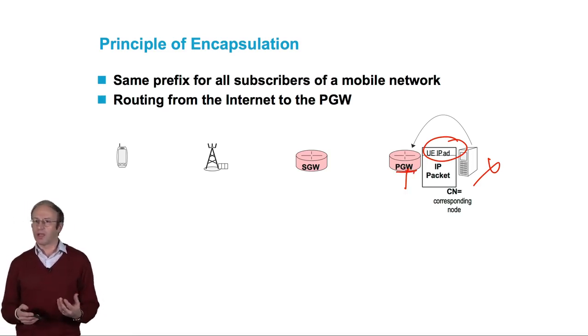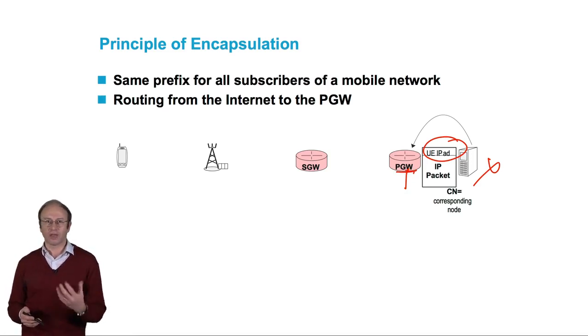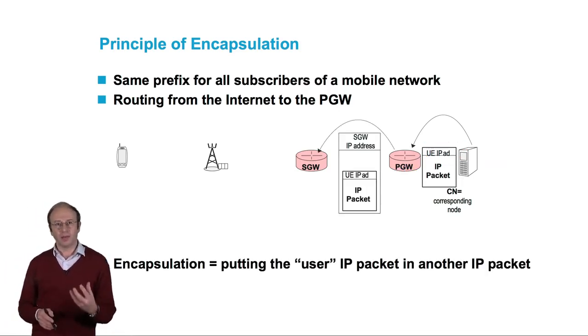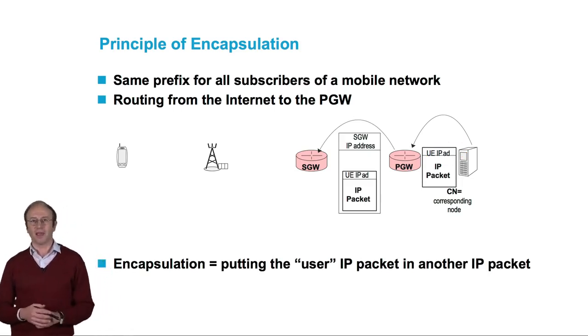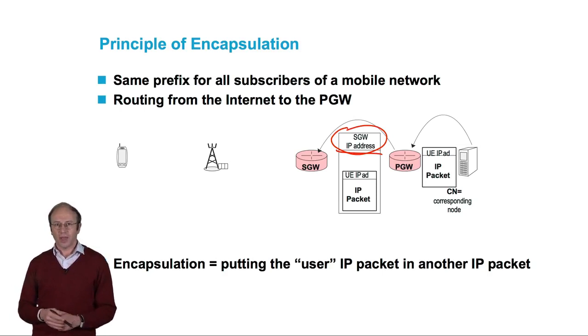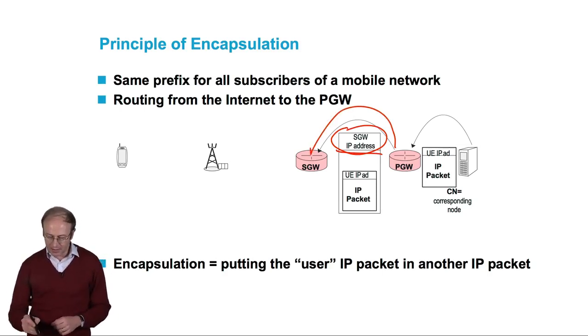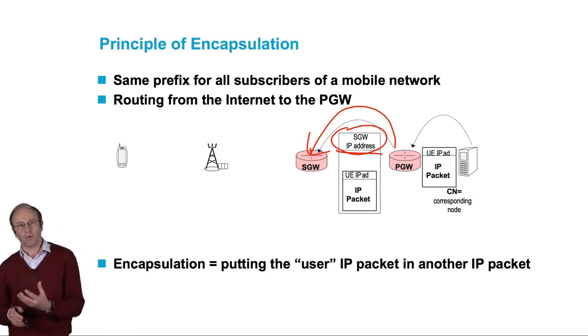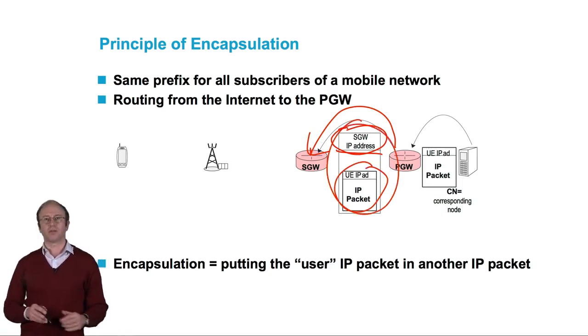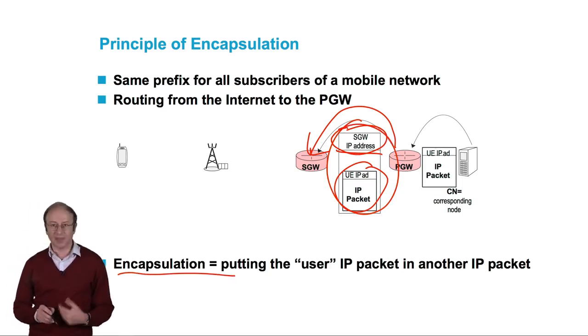When we want to transmit the packet to the correct terminal, we will first transmit it to the serving gateway, placing it in another IP packet. This IP packet will have the IP address of the serving gateway as its destination address. The IP packet is then routed from the P-Gateway to the serving gateway. Putting one IP packet in another IP packet is called encapsulation.